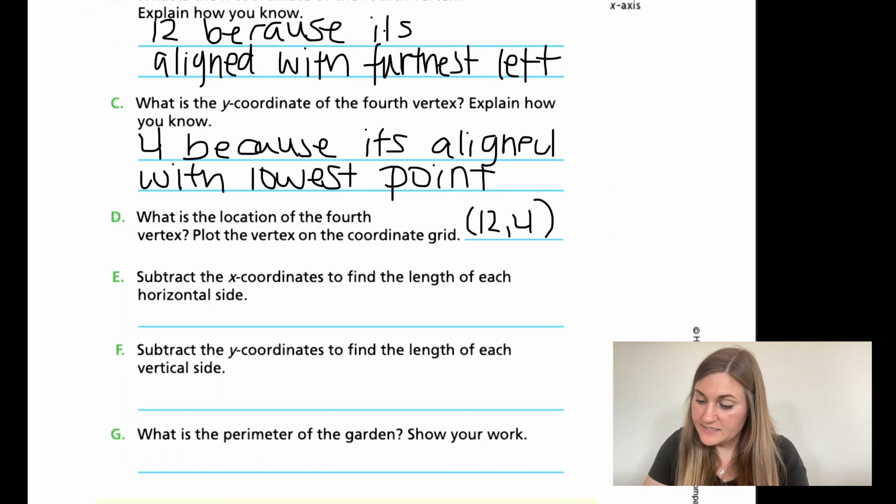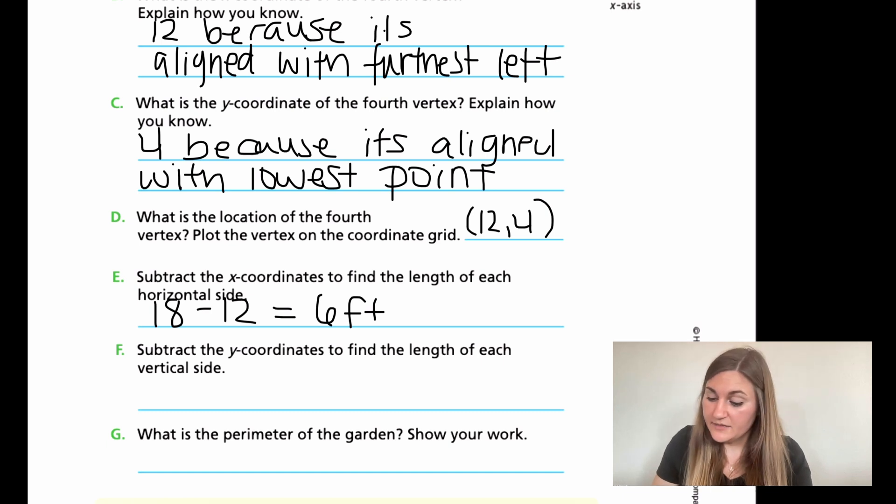For D, the location of the fourth vertex is X is 12 and Y is 4, so that would be (12,4). For E, subtract the X coordinates to find the length of each horizontal side. My farthest X coordinate was at 18 and my closest was at 12, so 18 minus 12 equals 6 feet across. Then subtract the Y coordinates. My highest Y coordinate was at 12 and my lowest was at 4, so that is going to be 8 feet.